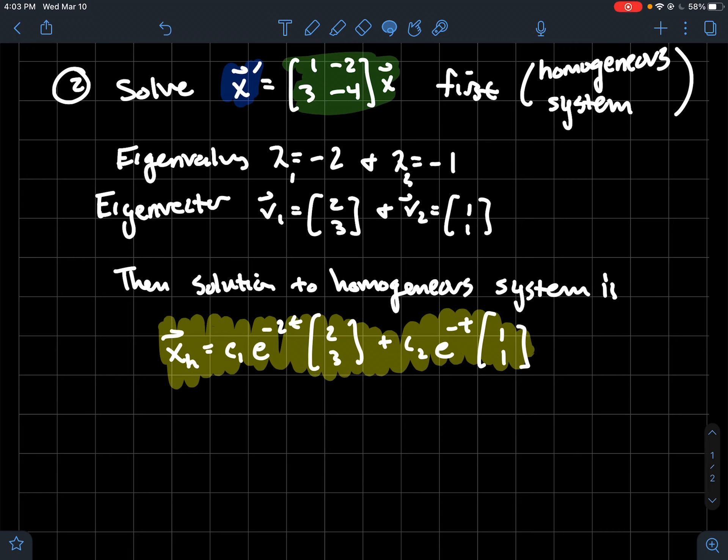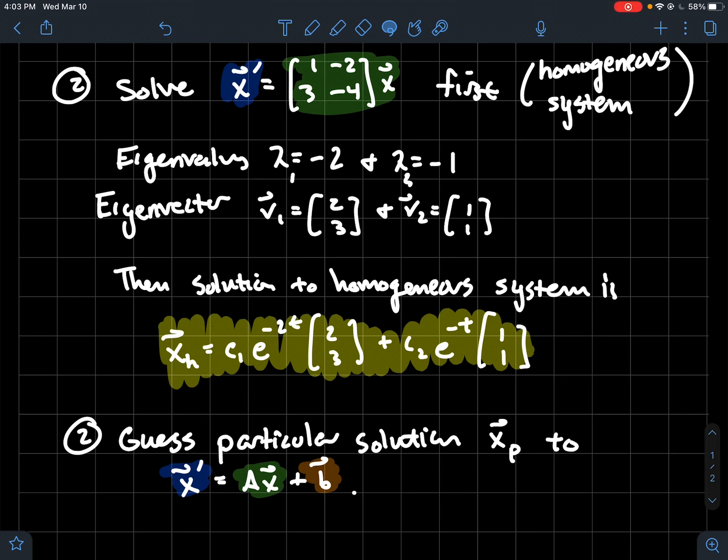So that's old news. Here's the new part: what do we do, how do we bring the b into the equation? What we're going to try to do is guess a particular solution to our inhomogeneous system. This is one of those times where it's more of a slick trick that you kind of observe what you think a good guess for the function xp might be.